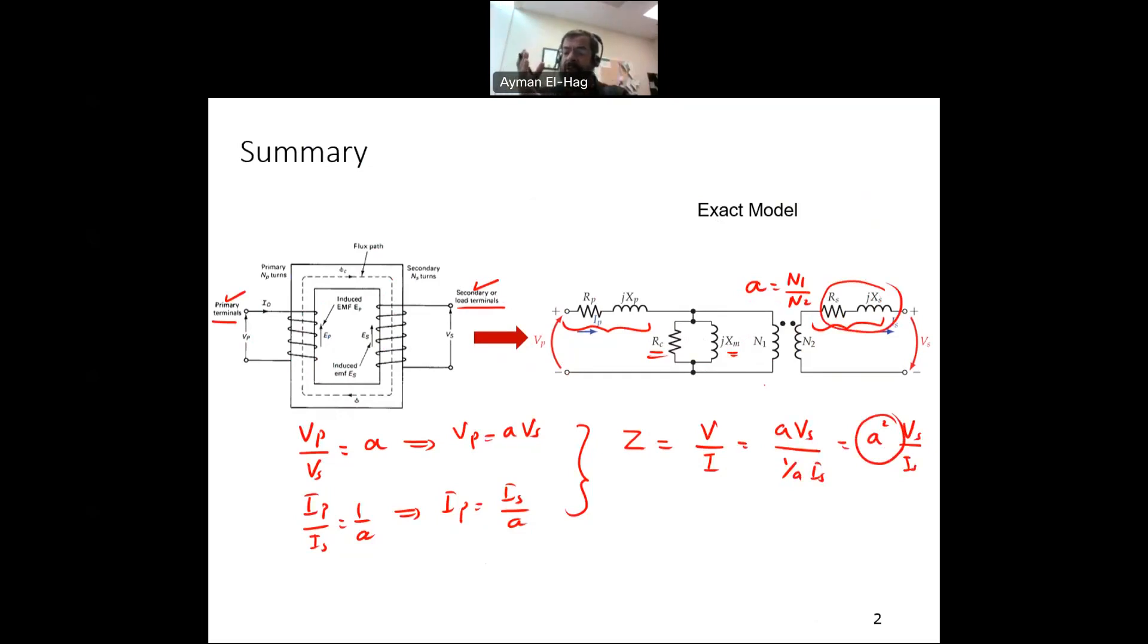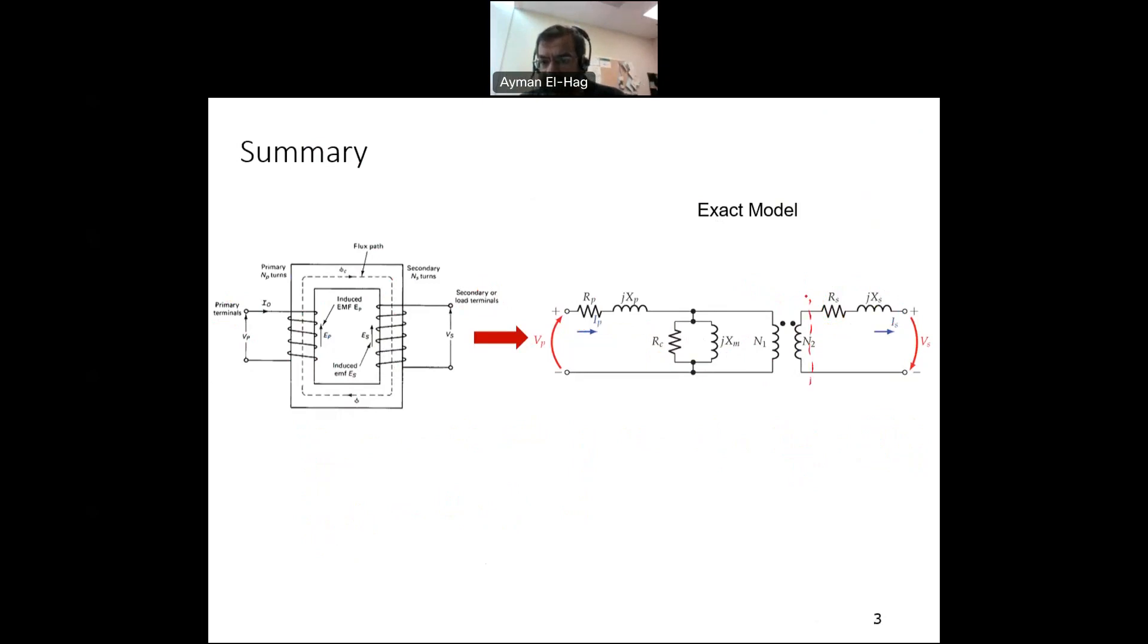So in summary, the voltage needs to be adjusted by multiplying by ratio A. The current needs to be adjusted by dividing by A. And the impedance, you need to multiply it by A squared. Now, this is if I want to refer everything from the secondary to the primary. I could refer it from the primary to the secondary. I will do exactly the opposite of each of these factors, but I don't want to do that. I want to stick only to referring everything from the secondary to the primary because this is more commonly used. So now I want to get rid of this part, and I want to have the two circuits, the primary and the secondary circuit connected together.